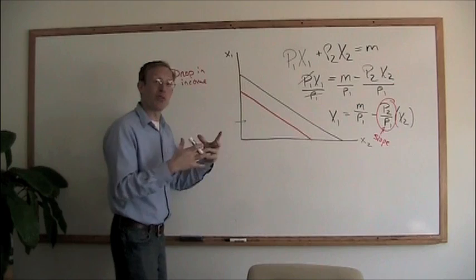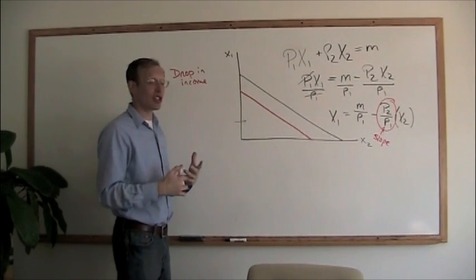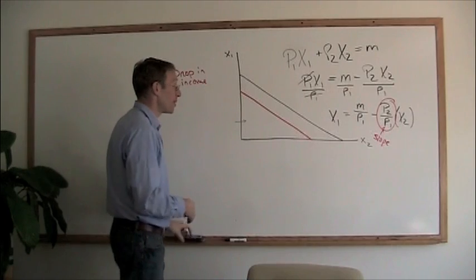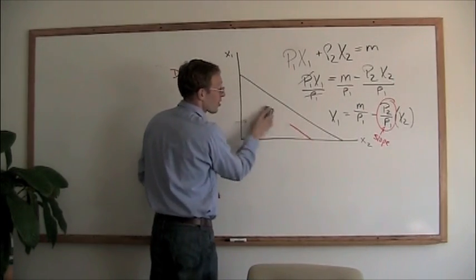Now, if the relative prices of the goods change, then the shift in the budget constraint looks a little bit different. So let's get rid of this curve here.